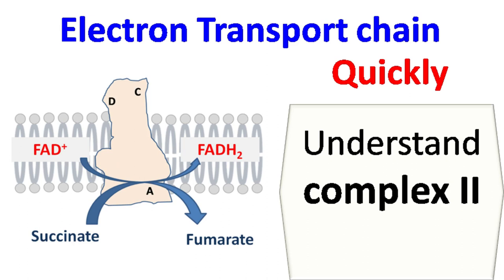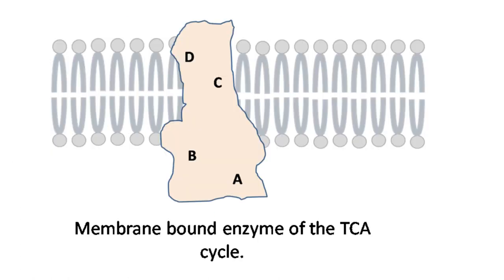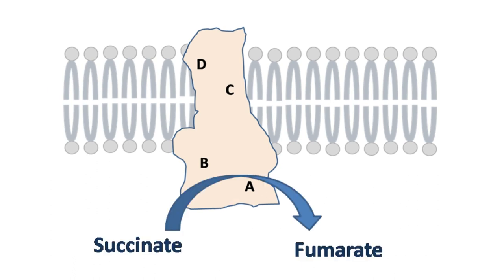Let's talk about Complex II of the electron transport chain. Complex II is the enzyme succinate dehydrogenase — it's the only membrane-bound enzyme of the TCA cycle.